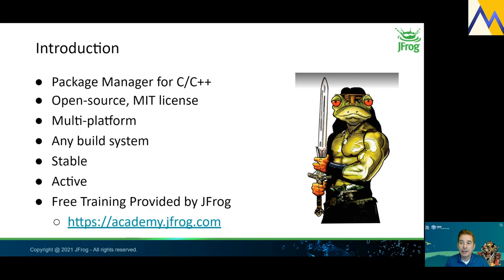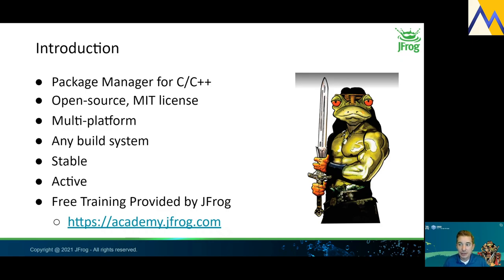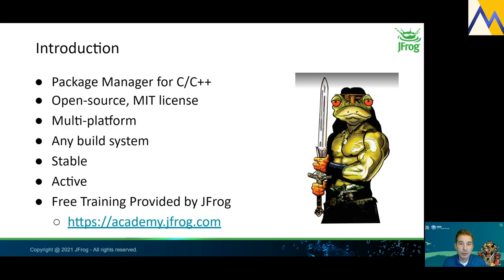Conan is a very active open source project. It has several full-time developers sponsored by JFrog, as well as a very active user community which submits dozens of pull requests every month. We also have a Slack channel with 1,200 members, and it is regularly one of the most active channels in the entire C++ community Slack. The Conan team has also created multiple interactive self-paced training courses available completely free on the JFrog Academy online training platform.